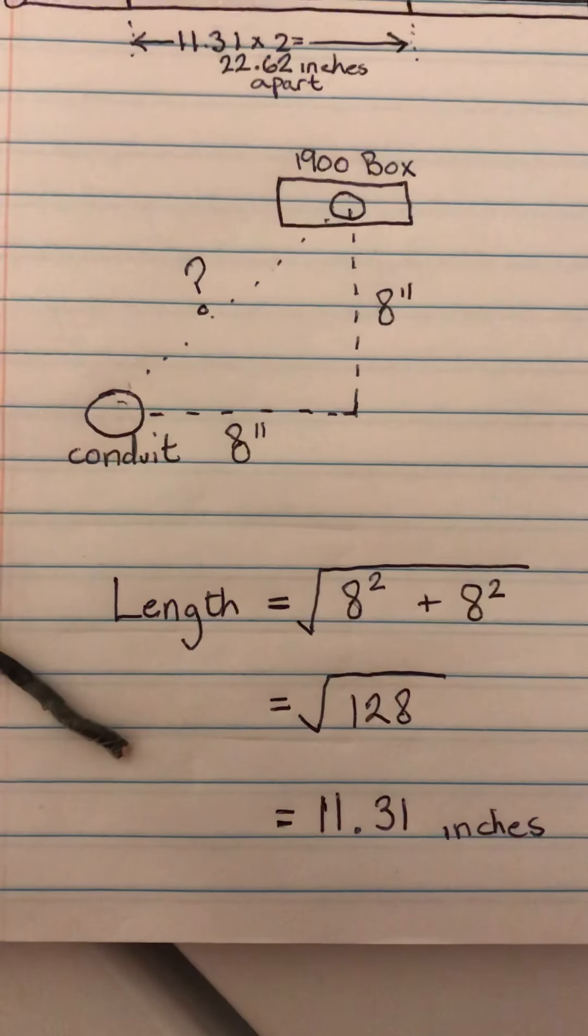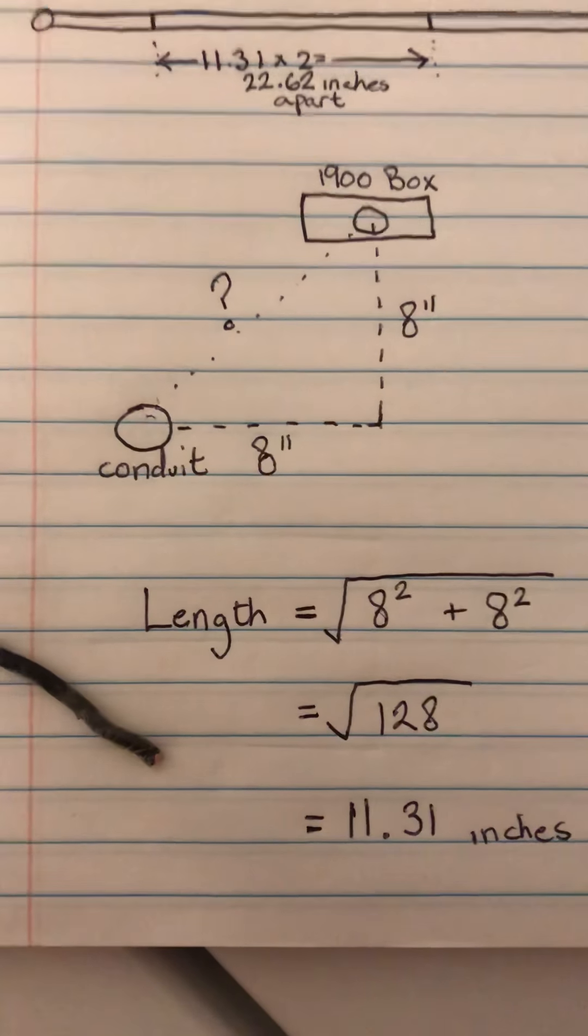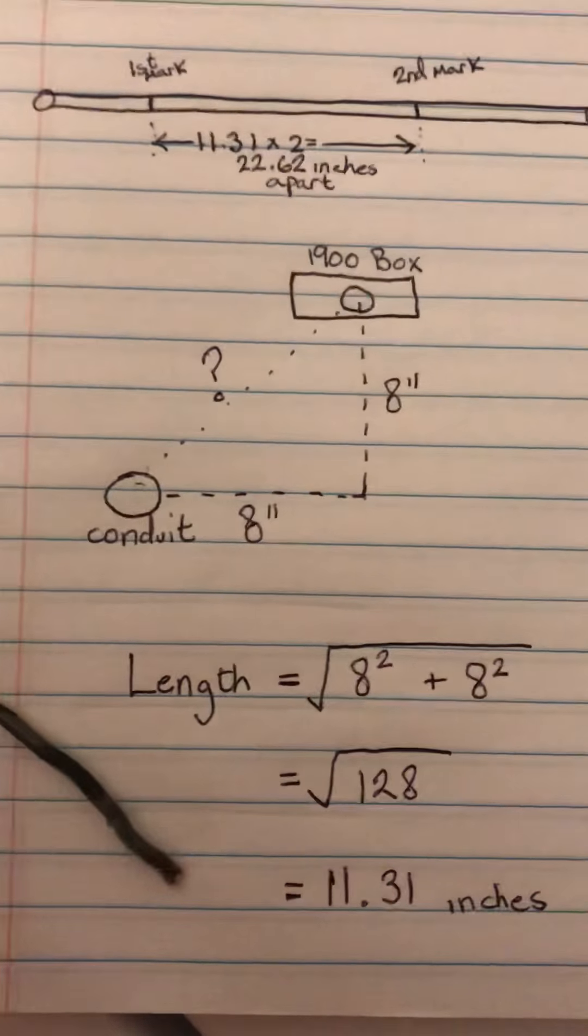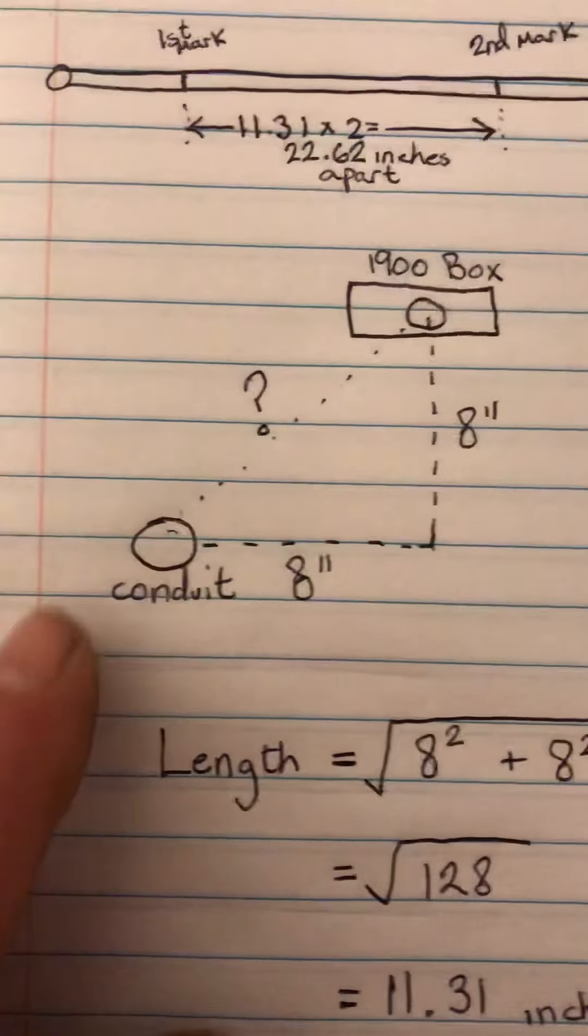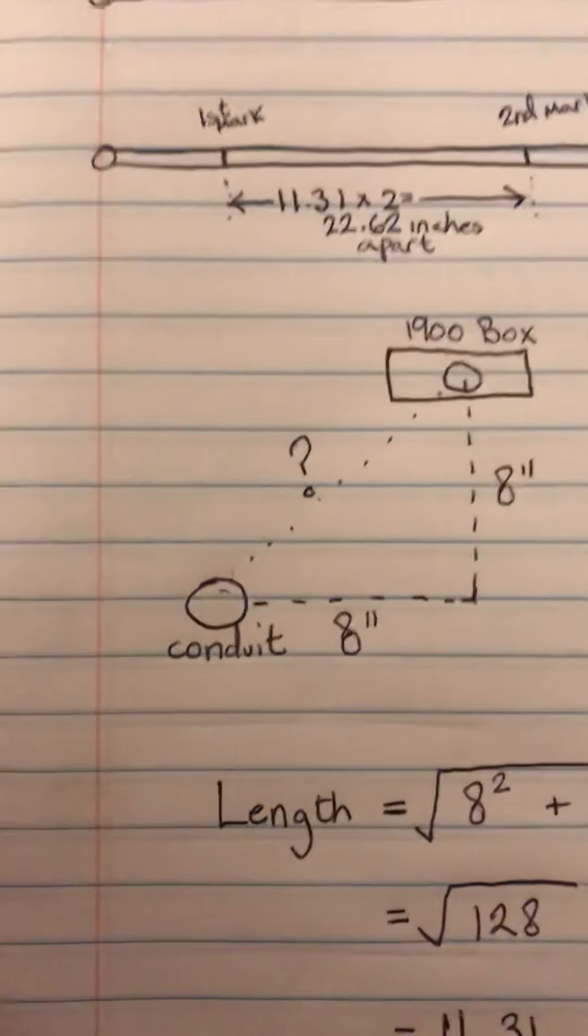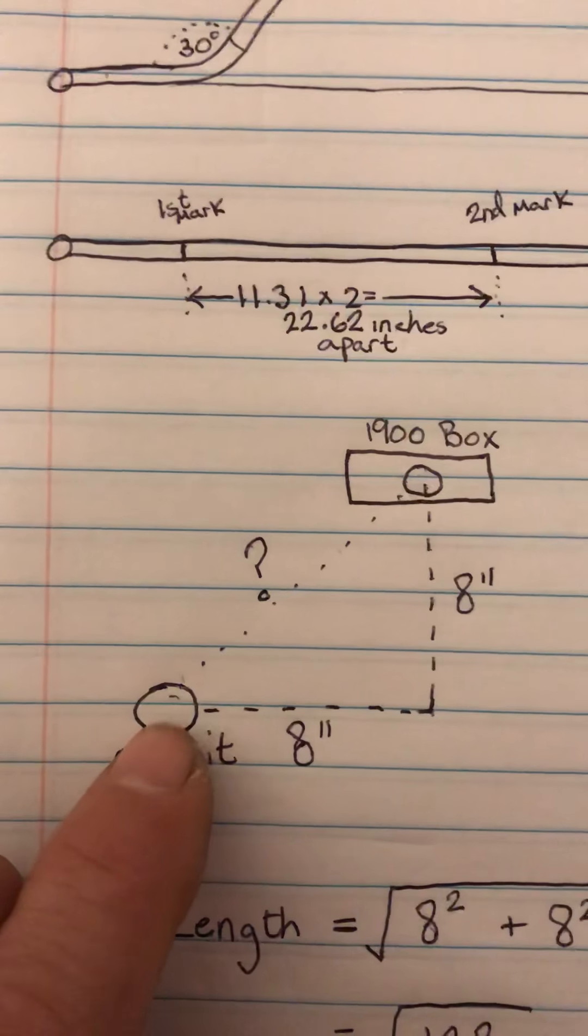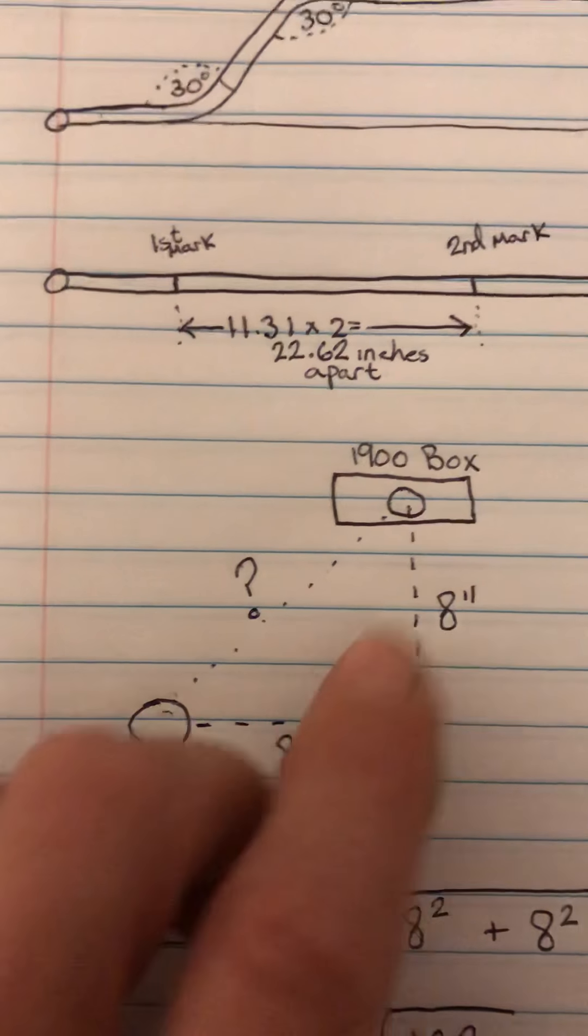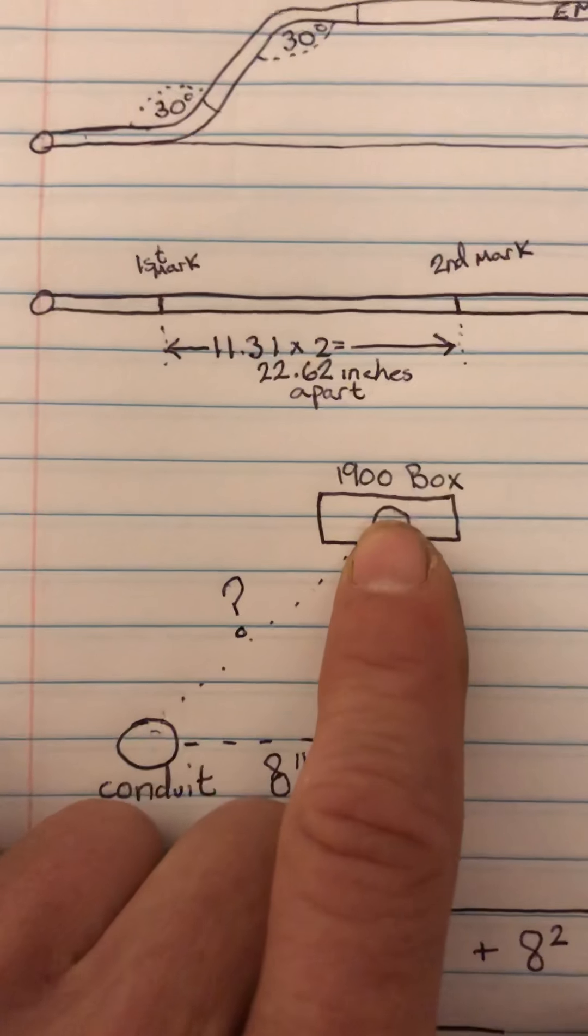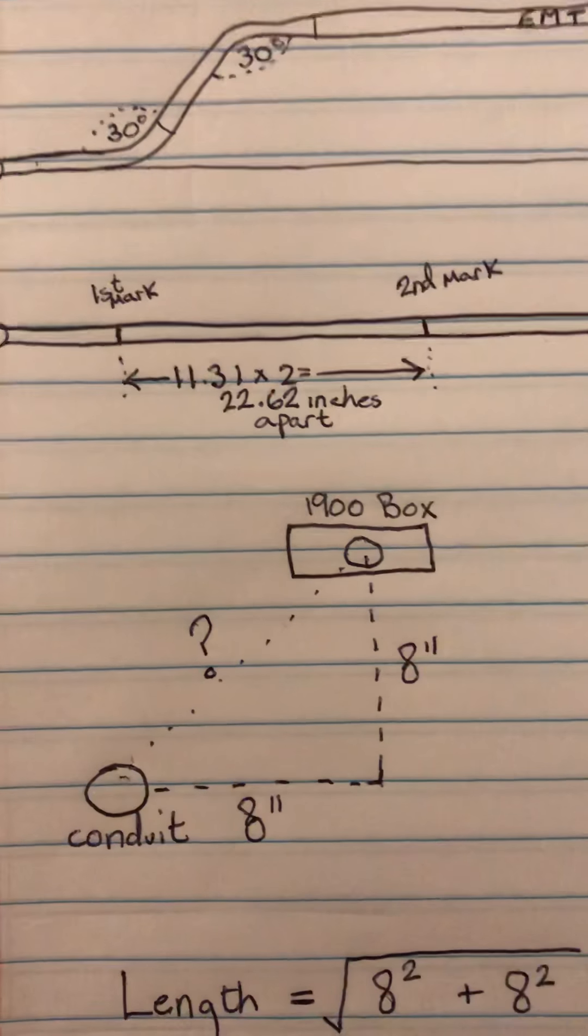Hi, today we're going to look at offset bends, in particular rolling offset bends. What we're looking at here is a conduit straight on - in other words, we're looking right down the pipe. We need to get this conduit to this 1900 box using a rolling offset.